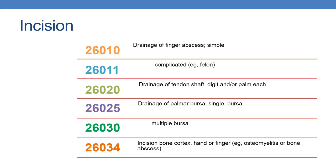Now coming to incision. The first CPT is 26010, which is drainage of finger abscess, simple. For drainage of finger abscess complicated, you need to assign 26011. And for drainage of tendon sheath, digit and/or palm, each, you need to assign 26020.